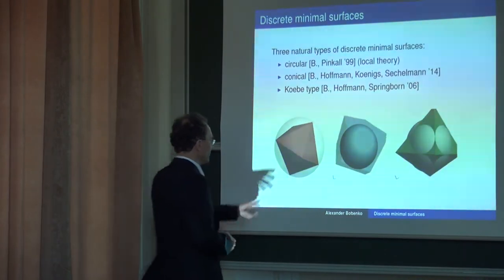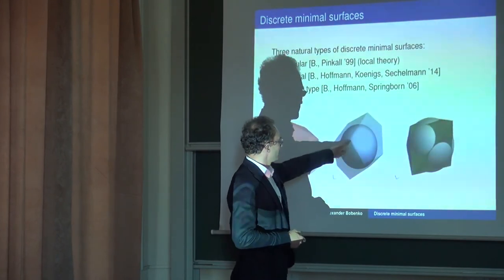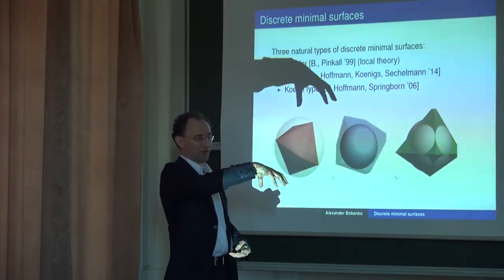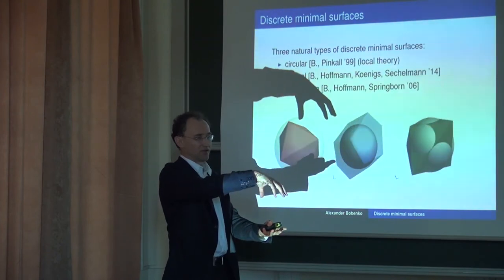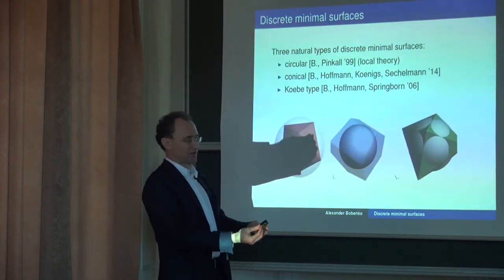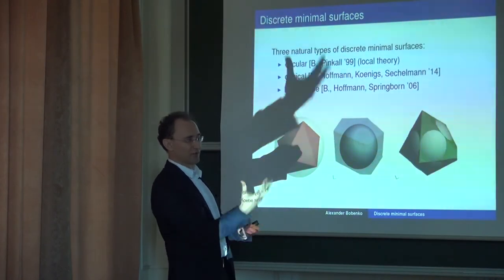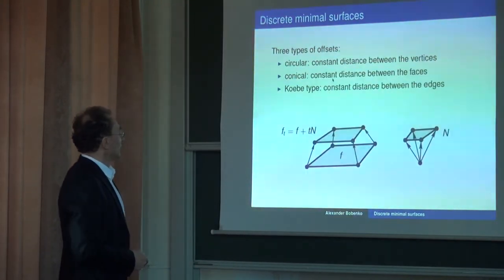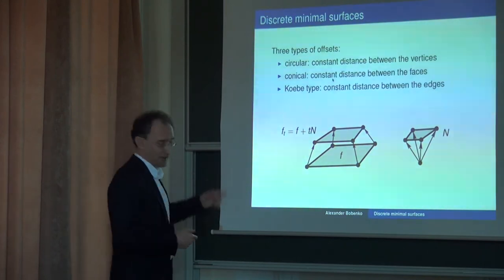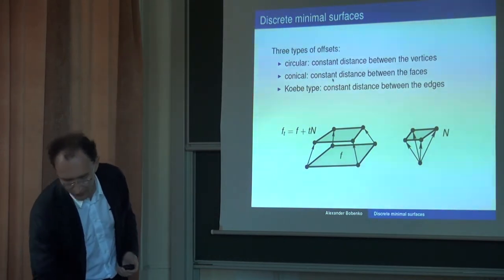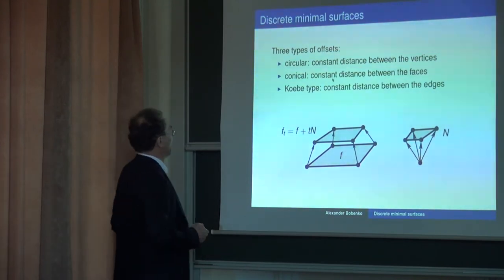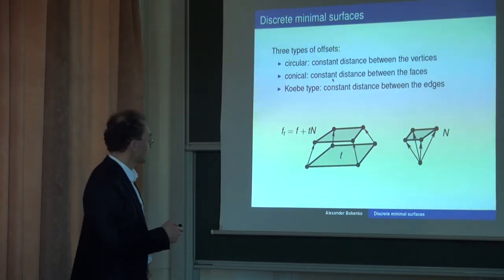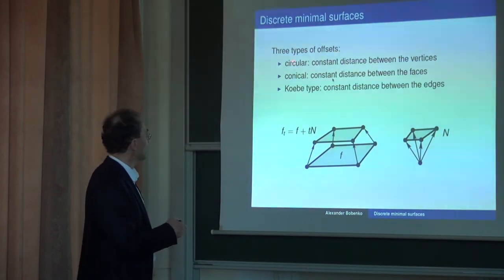I'm going to talk essentially about conical discrete minimal surfaces — this is work in progress, so some pictures are not yet quite perfect. You have faces that touch the sphere. Imagine you are at a vertex: you have faces touching a sphere, so you can put a sphere there such that it touches all the faces. You can replace the sphere by a cone that will be inscribed in this piece of your surface — that's the explanation of the term 'conical'.